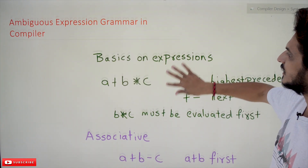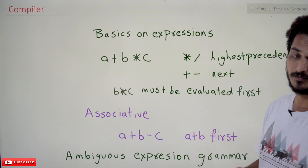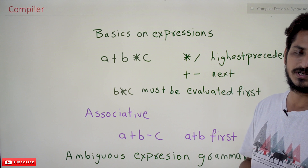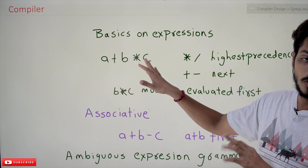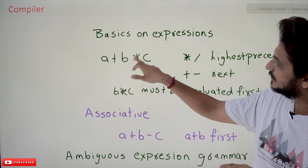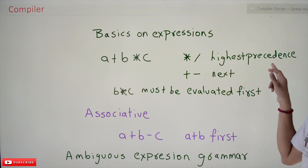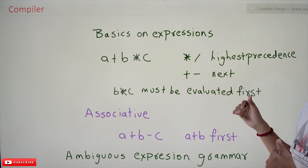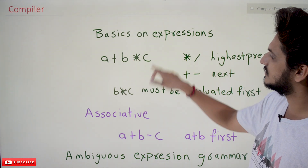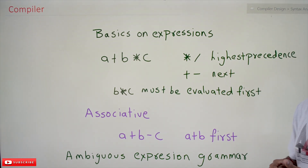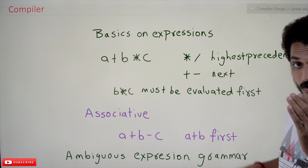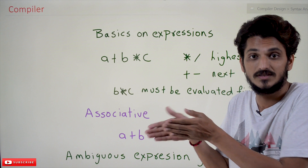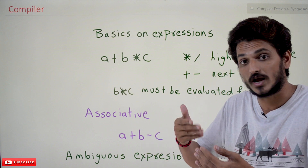Basics on expressions: before going into the concept, we have to understand some basics of expressions. A plus B star C has been given — how is it going to evaluate? Star is having the highest precedence, then we have plus and minus at the next level of precedence. So which one should be evaluated first? B star C should be evaluated first. The grammar which we are going to write should maintain this precedence.